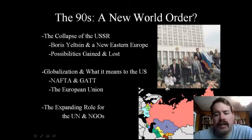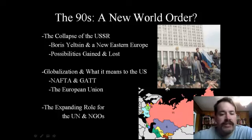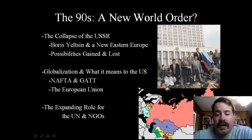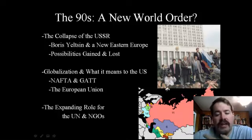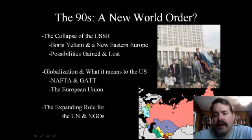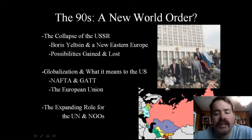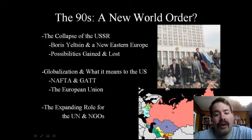You also see countries transitioning to a new form of government but also new boundaries peacefully. Czechoslovakia, predominantly made up of Czechs and Slovaks — the Czechs living closest to Germany, the Slovaks closest to what is today Ukraine — even though they don't hate each other, they don't like being in the same country. So in late 1989 and early 1990, Czechoslovakia undergoes what becomes known as the Velvet Revolution, in which Czechoslovakia splits in half. That's why today you have the Slovak Republic and the Czech Republic.